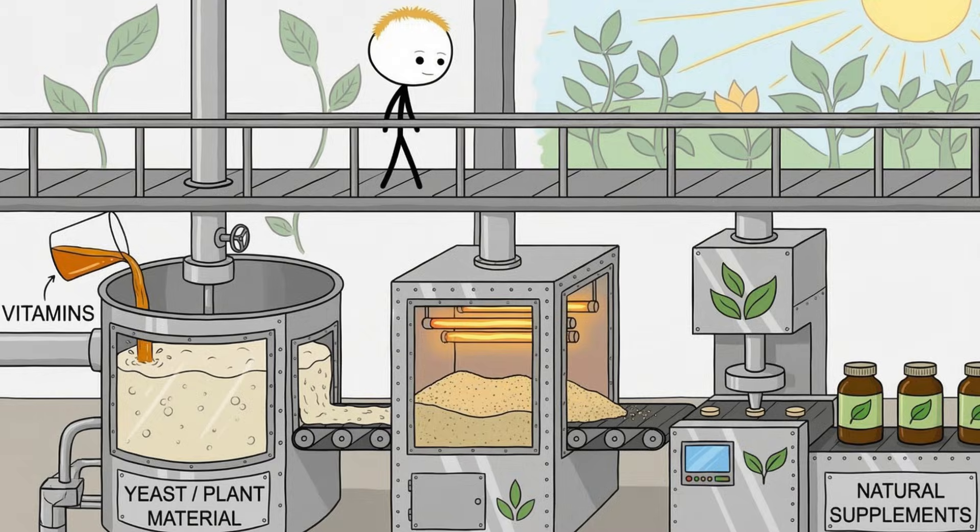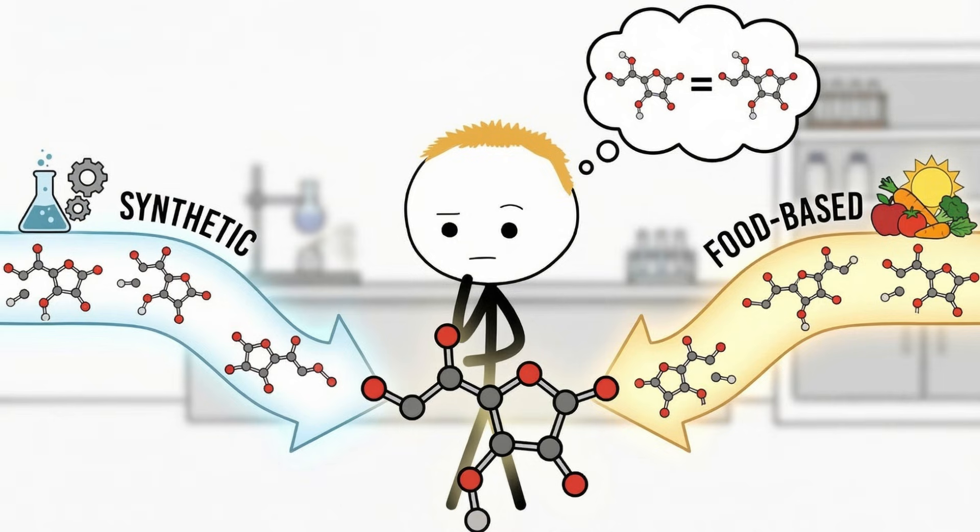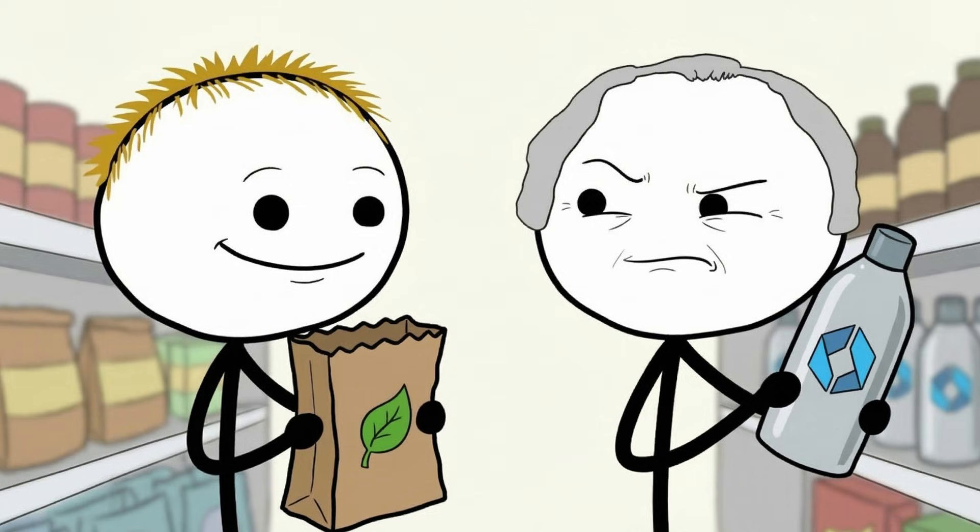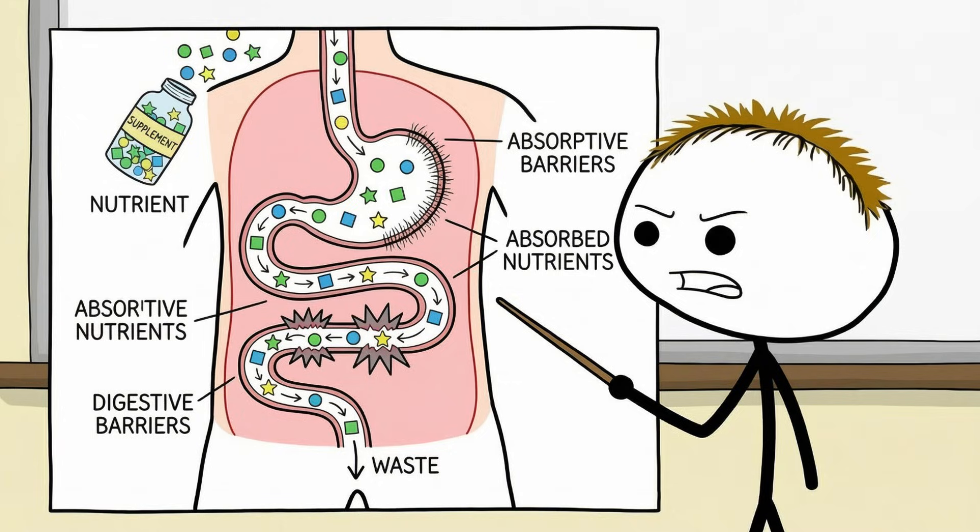Many food-based supplements are made by adding synthetic vitamins to yeast or plant material, then drying the mixture and calling it natural. Chemically, the vitamin inside is the same. Psychologically, the label feels safer.